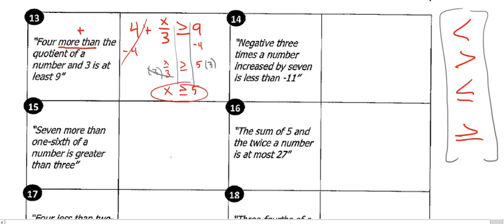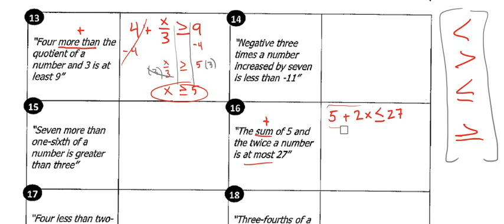Let's do number 16. The sum of five and twice a number is at most 27. Well, we know a sum means addition. So the sum of five and twice a number, so I guess that means twice a number, two times x, is at most 27. So that means 27 is the largest. At most, the biggest it could be is 27. It could be 27, but it can't be any bigger. That means all of this has to be less than 27. At most, it can be 27.